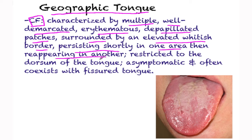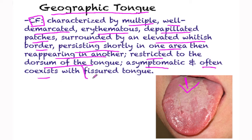Basically they appear, disappear, and reappear. They're restricted to the dorsum of the tongue — as you can see, it's a bit further back here. They are symptomatic and often co-exist with a fissured tongue.